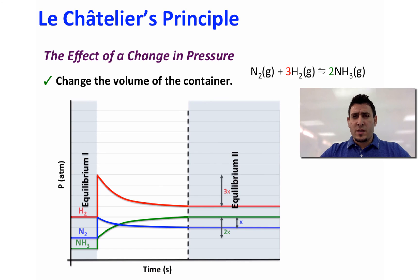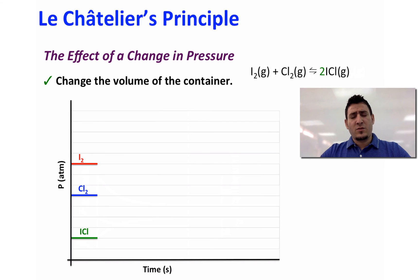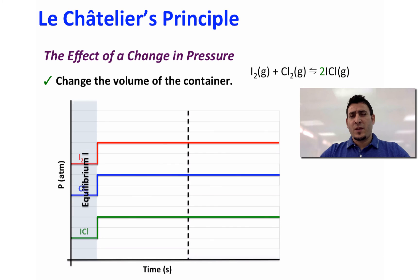However, this is not always the case. Consider the reaction between I2 and Cl2 to give 2 ICl. In this reaction, we have two particles on the reactant side and two particles on the product side. If we decrease the volume of the container, the partial pressures of the components will increase. However, the equilibrium will not be affected, and therefore the new equilibrium pressures will simply be the newly calculated pressures after changing the volume.